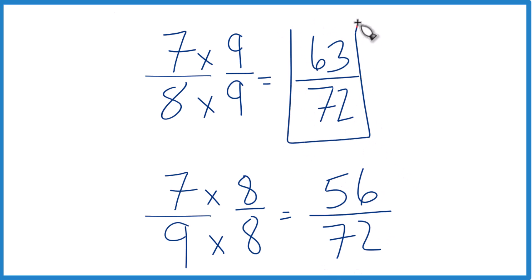63 is bigger than 56. So 63/72 is bigger than 56/72 by 7/72. Because these are equivalent, that means 7/8 is going to be larger than 7/9. That's it. This is Dr. B. Thanks for watching.